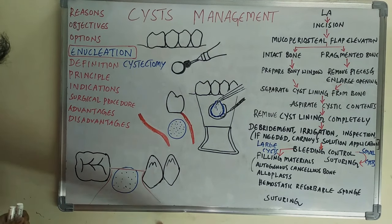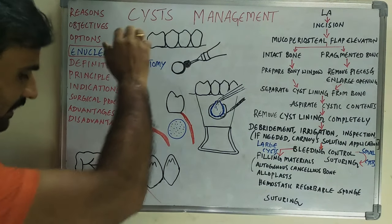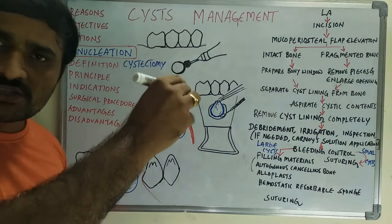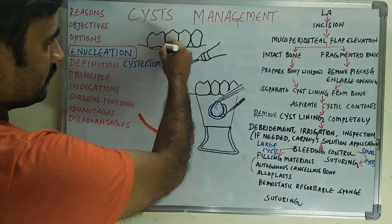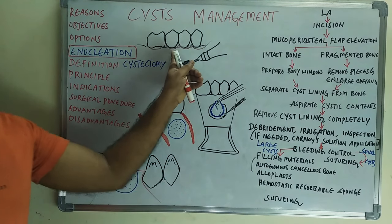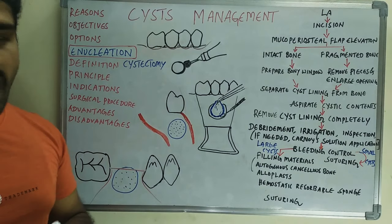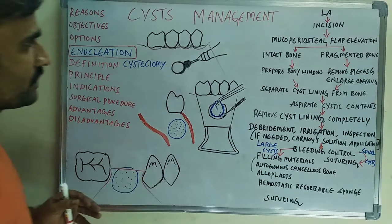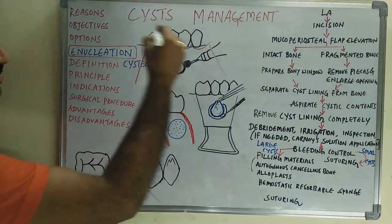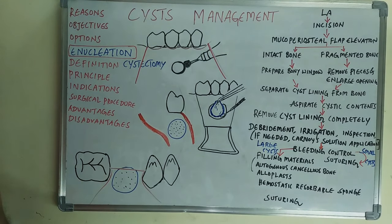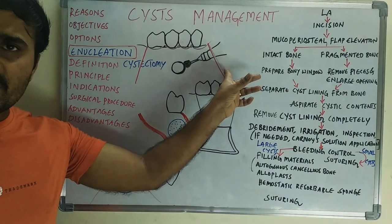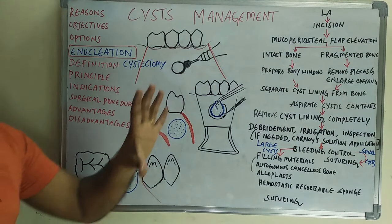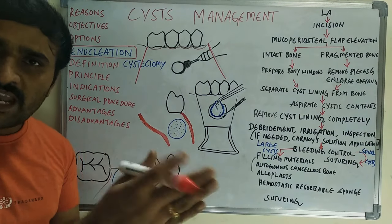In edentulous patients, an incision is made at the alveolar crest with two vertical releasing incisions. When teeth are present in the cystic region, we make crevicular incisions around the neck of the teeth, placed within the gingival sulcus. Depending on the situation, one anterior releasing incision may suffice for small cysts; for large cysts, both anterior and posterior releasing incisions can be used.